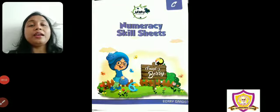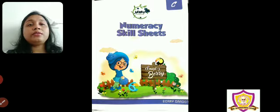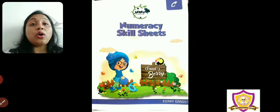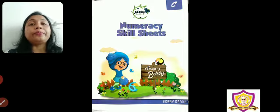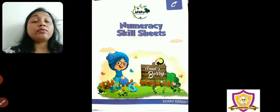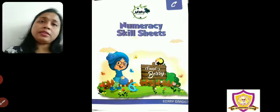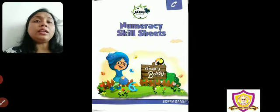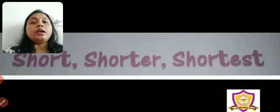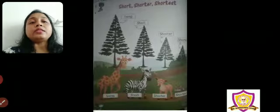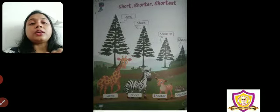Good morning, children. Today we will talk about long and short. When we have two objects, we can say which one is long and which one is short. When we have three objects, we can say longest, longer, and long. But what happens if you have four objects? Let's see — today we will discuss that.